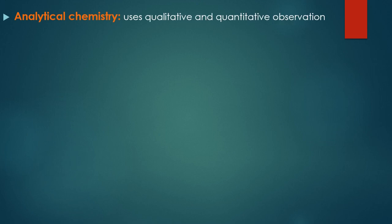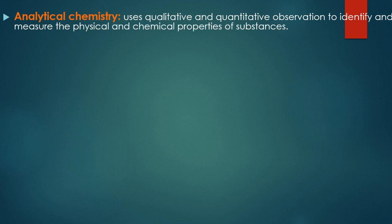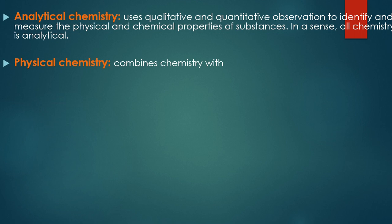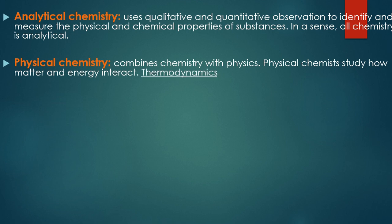Analytical chemistry uses qualitative and quantitative observation to identify and measure the physical and chemical properties of substances. In a sense, all chemistry is analytical. Physical chemistry combines chemistry with physics. Physical chemists study how matter and energy interact. Thermodynamics and quantum mechanics are two of the important branches of physical chemistry.